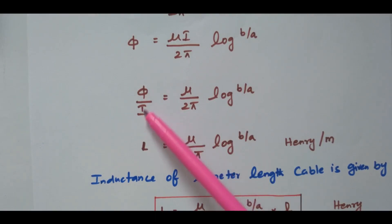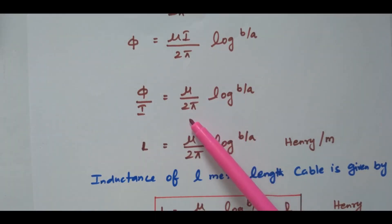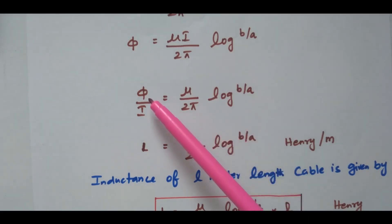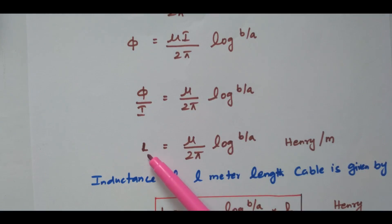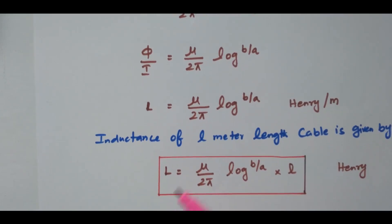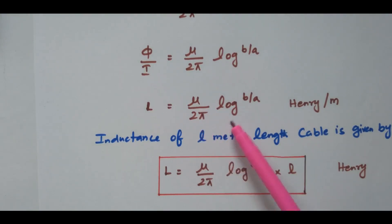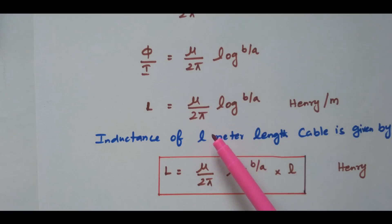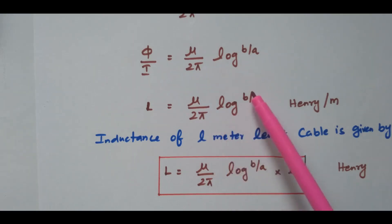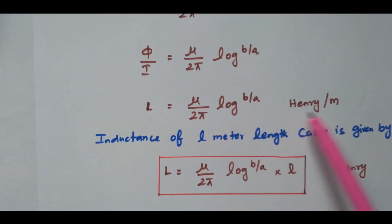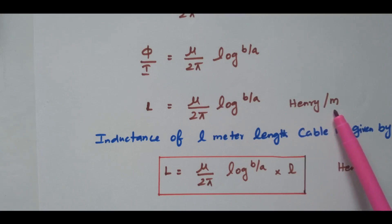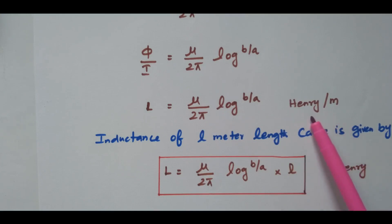So π/I = μ/(2π) · log(B/A). And π/I is nothing but inductance L = Nπ/I where N = 1. Therefore L = μ/(2π) · log(B/A). The final expression for inductance of this underground cable is μ/(2π) · log(B/A). The unit is Henry per meter, because we considered 1 meter length of cable.